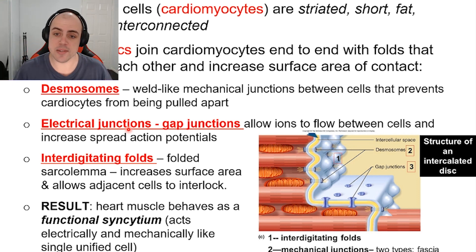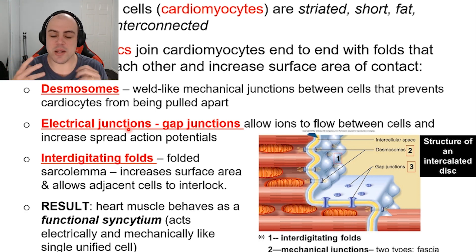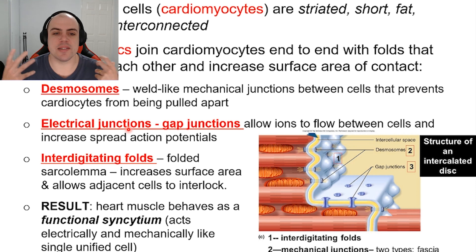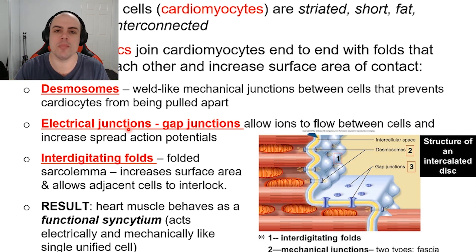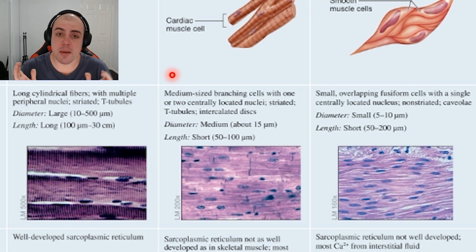The last microscopy feature is the interdigitating fold. This essentially increases the surface area, allows cells to interlock, and embeds within the sarcolemma. This allows us to obtain more calcium, which will again be very important in what we discuss in the next series of videos.